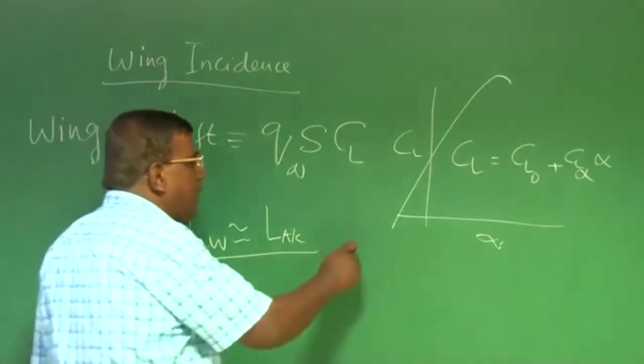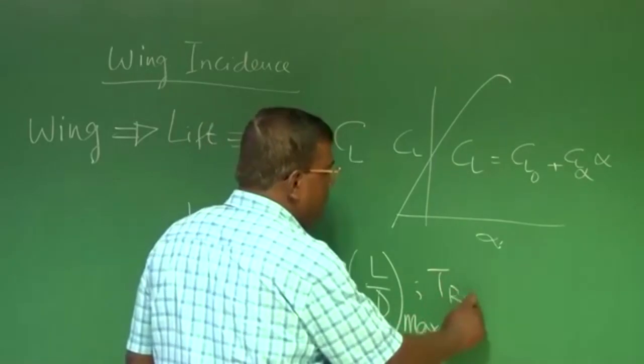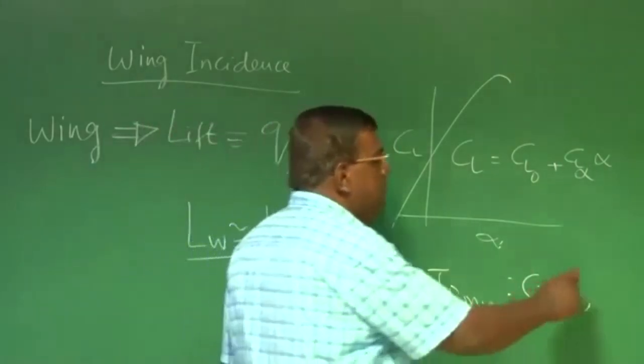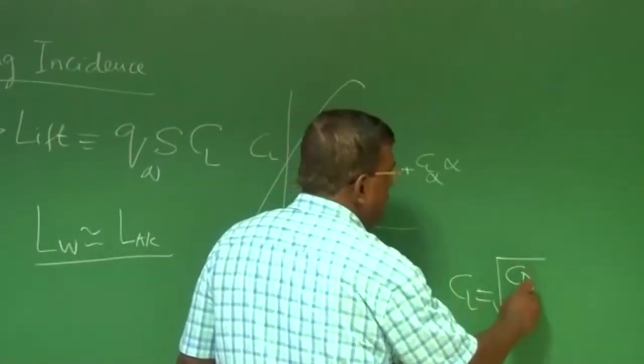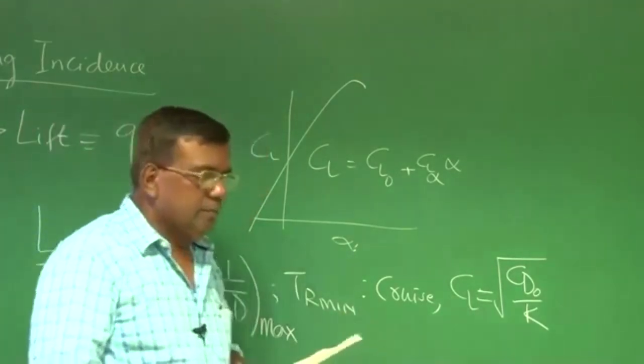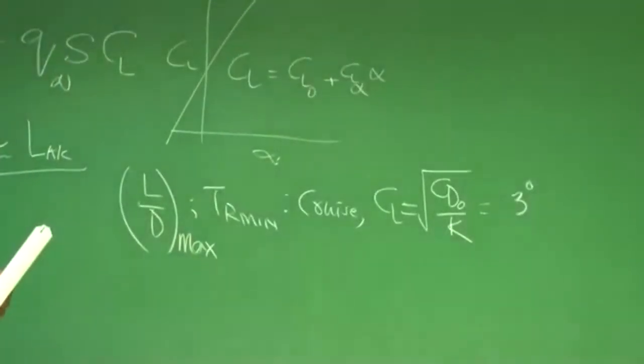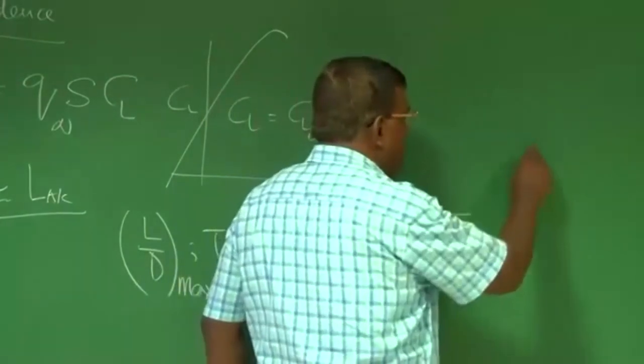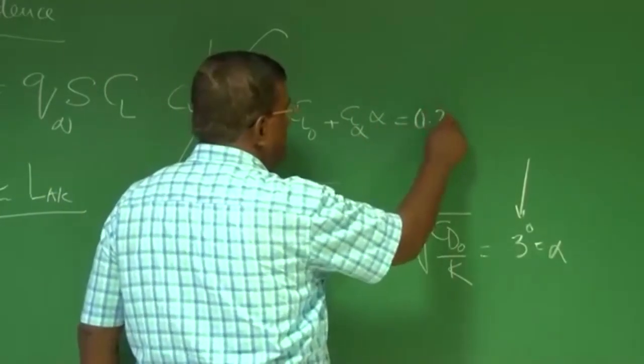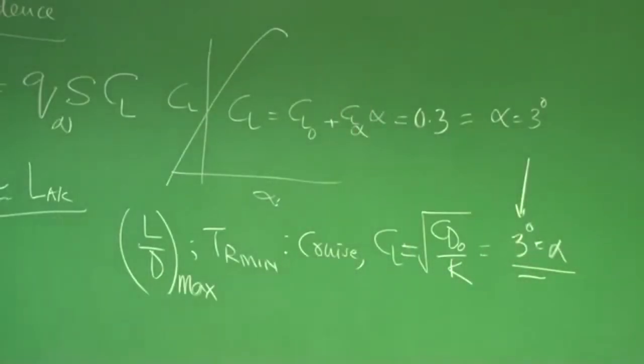So the question is, if I am flying such that I am to fly at L by D max, so that thrust required is minimum, which is typically during cruise, and that Cl is roughly CD naught by K, where you assume CD is CD naught plus KCl square. So I have an option. Either I design the airplane, let us say this angle is 3 degrees. What is the meaning of 3 degrees? That Cl is that Cl which corresponds to 3 degrees of alpha. That is, if I come here, if I put here, let us say Cl is 0.3 which corresponds to alpha equal to 3 degrees.